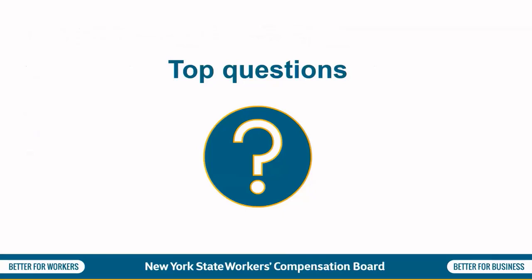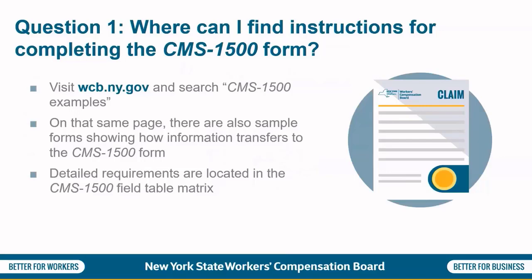Question 1: Where can I find instructions for completing the CMS 1500 form? PDF examples of CMS 1500 by provider type can be found at wcb.ny.gov by searching CMS 1500 examples. On that same page, there are also sample forms showing how information from Form C4, C4.2, C4AMR, C5, EC4NER, PS4, and OTPT4 transfers to the CMS 1500 form. Additionally, the CMS 1500 field table matrix gives specific data requirements for each field as well as business rules associated with some of the fields.